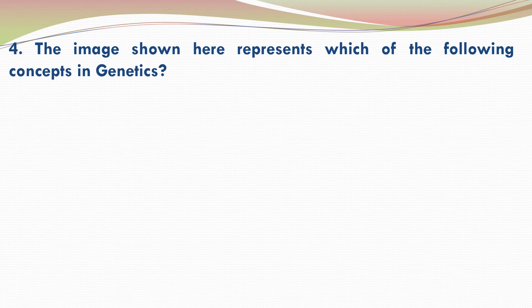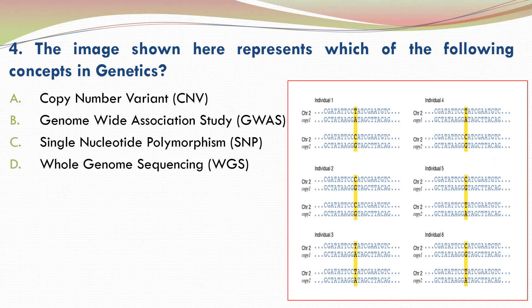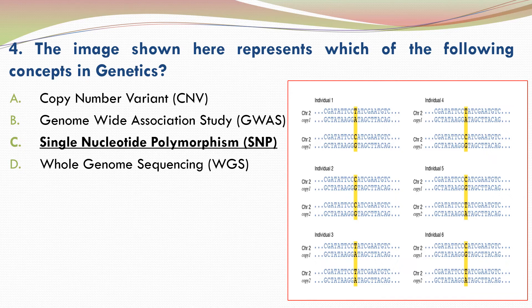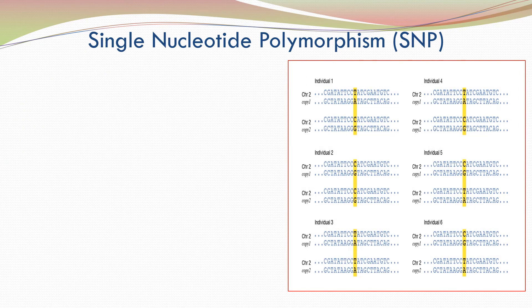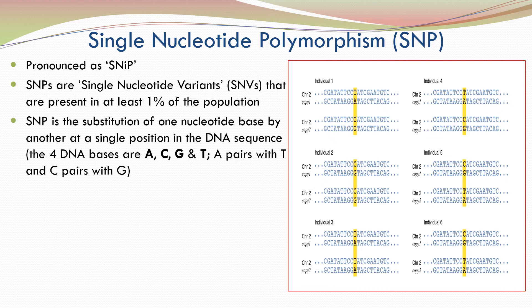Question 4: The image shown here represents which of the following concepts in genetics? The correct answer is C, single nucleotide polymorphism. This image represents a single nucleotide polymorphism. Single nucleotide polymorphism, or SNP, refers to single nucleotide variants that are present in at least one percent of the population. A SNP is the substitution of one nucleotide base by another at a single position in the DNA sequence.